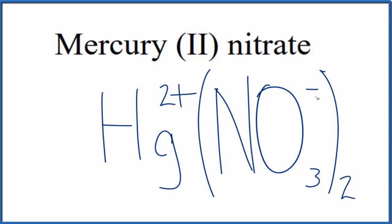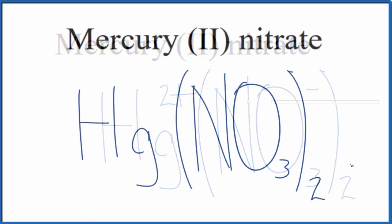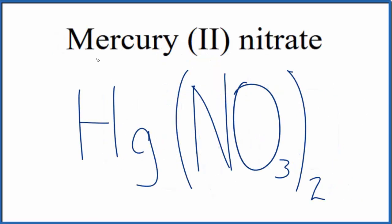2 times 1-, that's 2-. And 2+ gives us a net charge of 0. So this is the formula for mercury (II) nitrate, Hg(NO3)2.